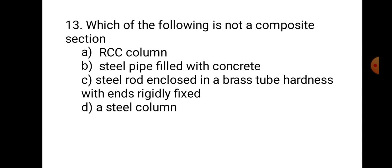Question number 13. Which of the following is not a composite section? A. RCC column, B. Steel pipe filled with concrete, C. Steel rod enclosed in a brass tube, D. A steel column. Options A, B, and C all use two materials, making them composite sections. A steel column uses only steel, so it is not a composite section. Hence, the correct answer is D, A steel column.